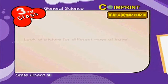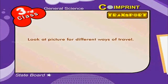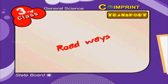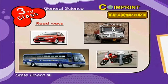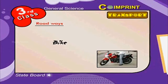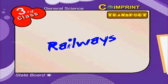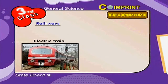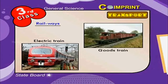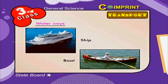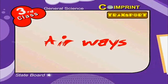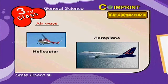Look at the picture for different ways of travel. Roadways: we use bus, lorry, car and bikes. Railways: electric trains and goods. Waterways: boats and ships. Airways: aeroplanes and helicopters.